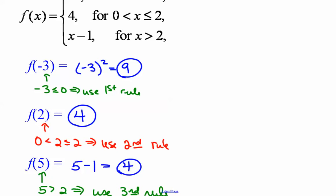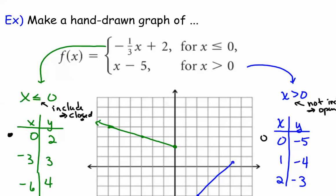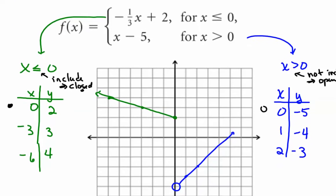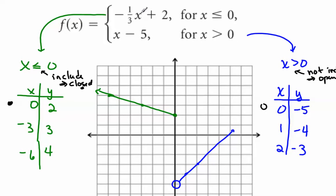But let's see about graphing these. For this one, I'm just going to use a two-part function here, and they're both going to be linear functions. The first one is negative 1 third x plus 2, and we're going to use that for all x's less than or equal to 0. And the other one is x minus 5. That's true for x's greater than 0.